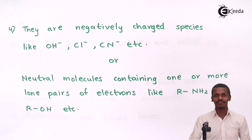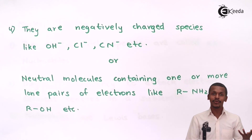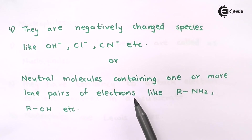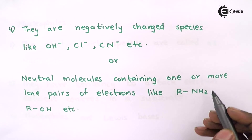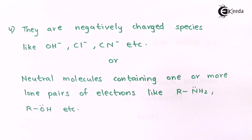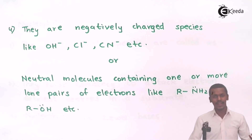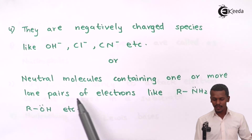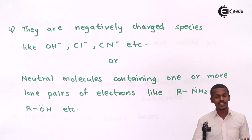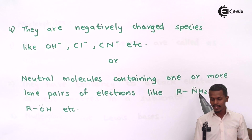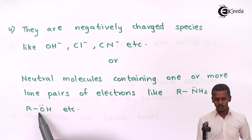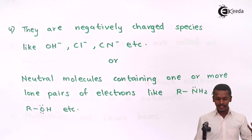It is not necessary that every negatively charged species is a nucleophile, because there are also neutral molecules that behave like nucleophilic reagents — for example, NH₃, because it consists of a lone pair of electrons on nitrogen. These neutral molecules behave like nucleophilic reagents because they have one or more lone pairs of electrons. In ammonia, one lone pair is present on nitrogen, while in an alcohol, two lone pairs are present on the oxygen atom.